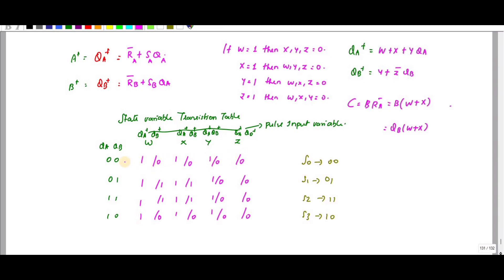Now let us discuss QB. QB is 0 for some cases. If I substitute — this becomes 1, so definitely this will be 1. If Y is 1, the Y term contributes; if Y is 0, this term will be 0. You can see that for this case QB is 1 and Z bar means Z bar will be 1, so you get 1 and 1.